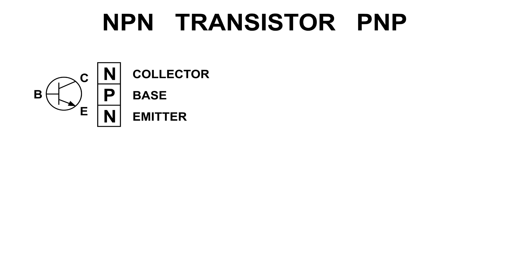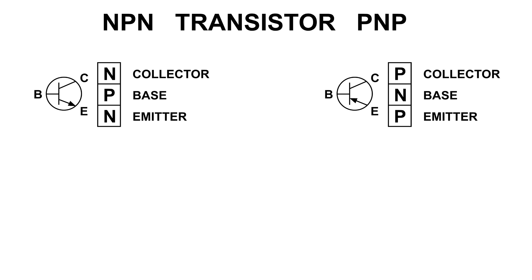We're going to take a look at the NPN and PNP junction transistor. Here's the wiring diagram. In the center is a silicon chip, and as they grow this they change the doping to make N material, then P material, and then N material again. This is what the NPN wiring diagram and construction looks like. In the construction of the PNP, we have P material, then N material, and then P material again.